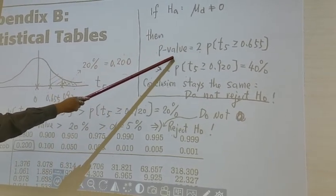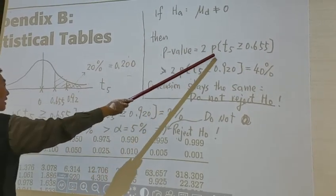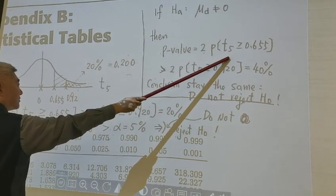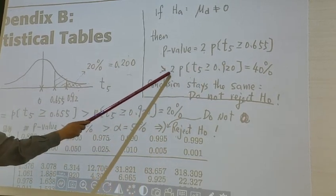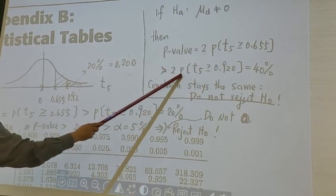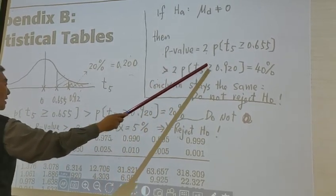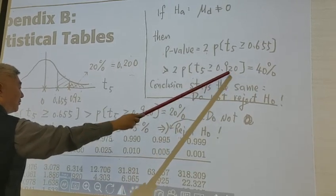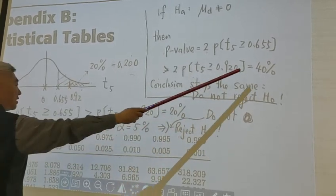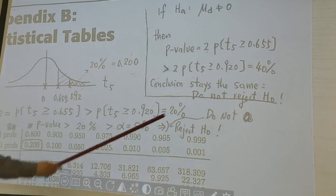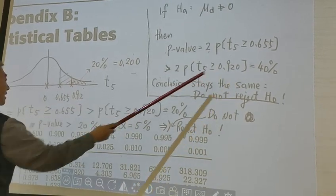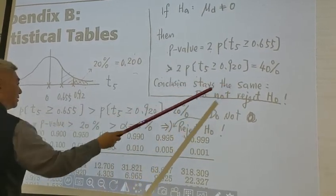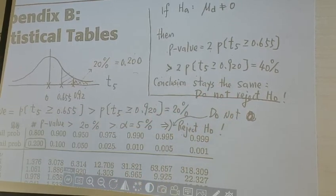The p-value now will become 2 times the probability T greater than or equal to 0.655, which is bigger than 2 times the probability T5 greater than or equal to 0.920. And before it's 20% times 2 is 40%. So this is still bigger than 5%. So we say the conclusion stays the same: do not reject H0.